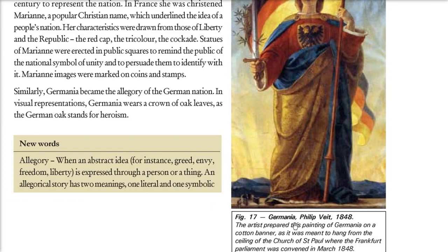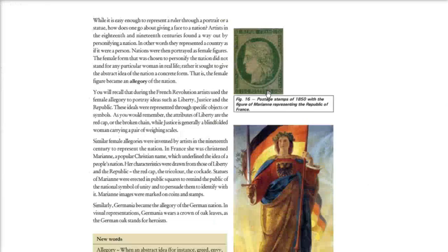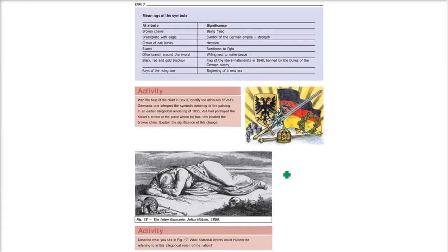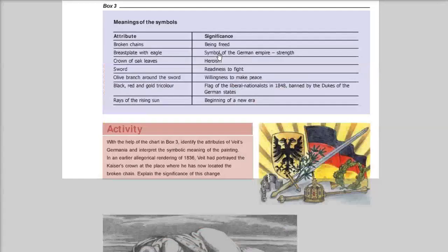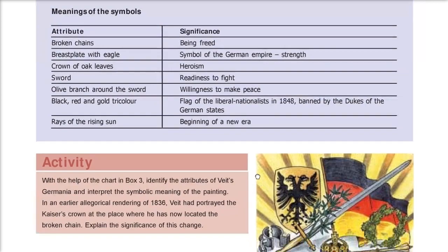What were the meanings of symbols in Germania? Broken chains means being freed. A breast plate with eagle means the symbol of German empire's strength. The crown of oak leaves suggests heroism. A sword means we are ready to fight. An olive branch around the sword means we are willing to make peace. The black, red, and gold tricolor was the flag of liberal nationalists in 1848, banned by the dukes of German states. Rays of rising sun signify the beginning of a new era.